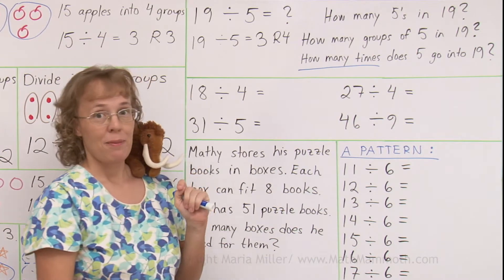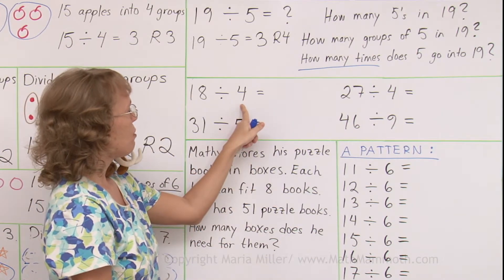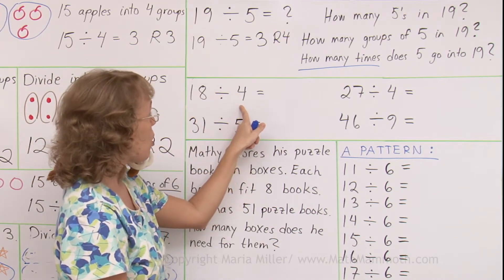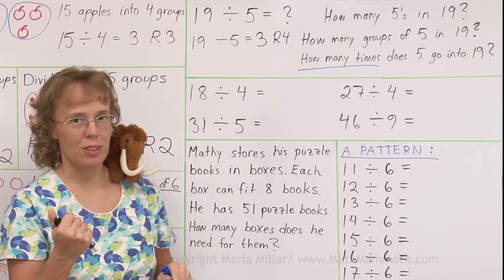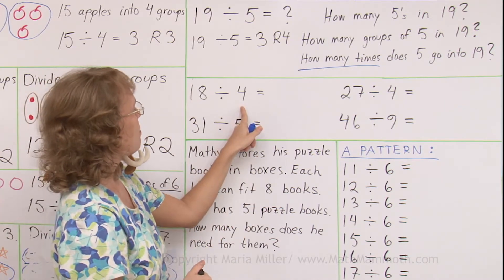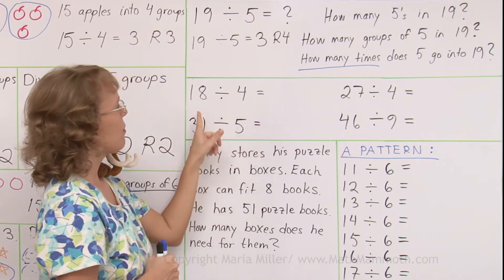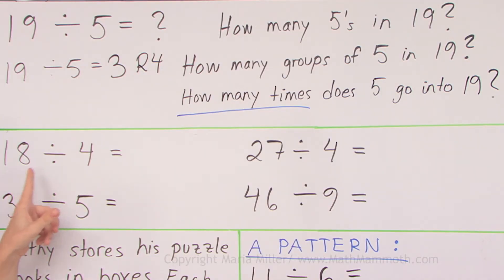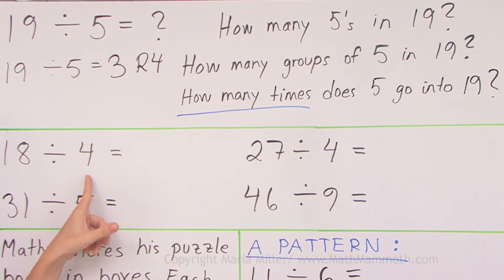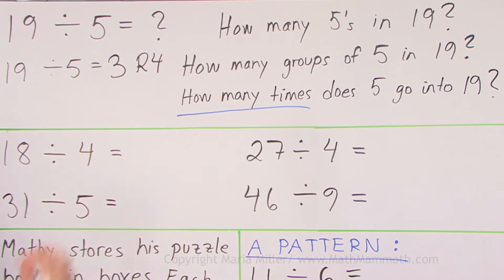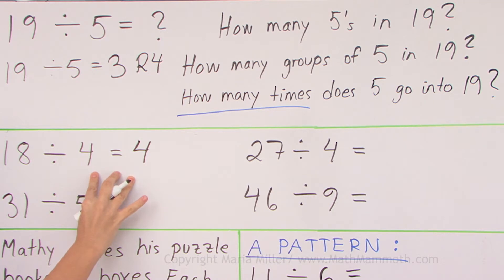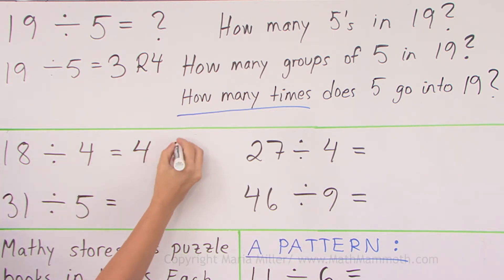We think the same way. How many groups of 4 are in 18? Or how many times does 4 go into 18? Use multiplication. For example, 6 times 4 is 24, so 4 does not go into 18 six times. 5 times 4 would be 20 — no. But 4 times 4, yes. The answer is 4. And then 4 times 4 is 16, and the remainder is the difference between 16 and 18, which is 2.